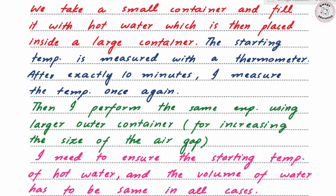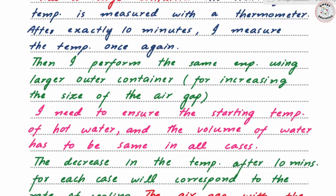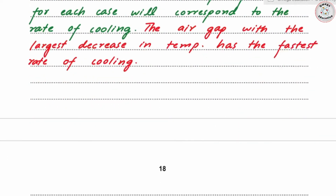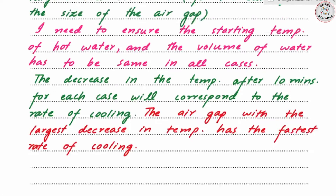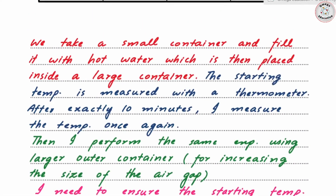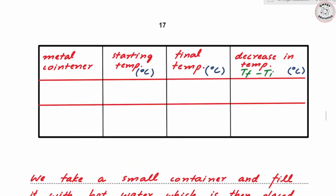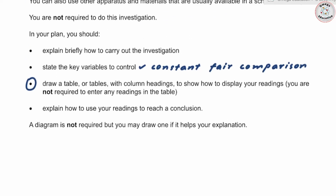This question is worth six marks, and marks are allocated for: the table, mentioning the control variables, describing the apparatus and how to carry out the investigation, and explaining how you would reach the conclusion.